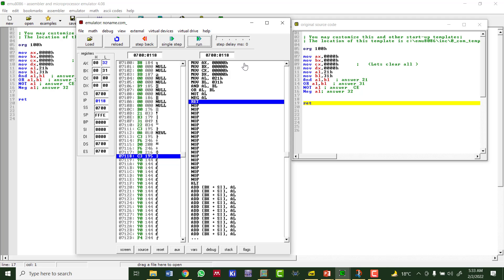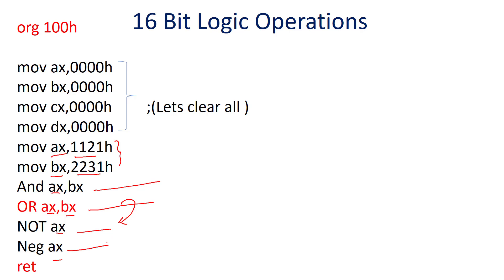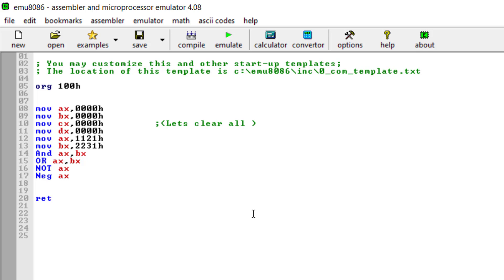Now we will see the 16-bit logical operation and how it will be done. In 16-bit logical operation, everything is the same — the only difference is we are using the AX register instead of AL and BL registers. Make sure when you complement it, you take all 4 bits as your reference value. You perform the AND operation of the two values, then the OR operation, then the NOT operation of the result of the previous instruction, and then the negation operation. Let's simulate it by copying this code.